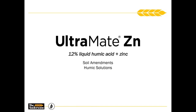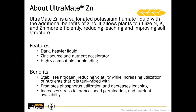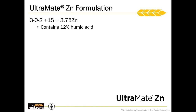Another product in that 12% humic category is our Ultramate ZN. This is the addition of zinc into that tank mix, already pre-mixed. It's a sulfonated potassium humate product with a nitrogen, potassium, and zinc component to it. This is our opportunity to minimize volatilization — it's a really great stabilizer for nitrogen and reduces that volatilization. We're also going to promote phosphorus utilization, and it's a product that can be added into a starter mix, where we see a really nice benefit for helping feed beneficial bacteria. This product is a 12% humic product with the zinc component included.